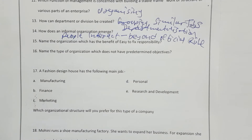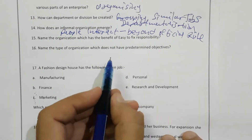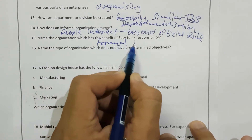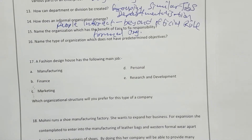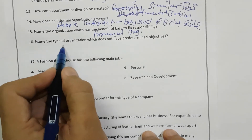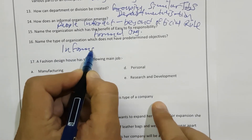Name the organization which has the benefit of easy fixed responsibility. Obviously it is formal organization, because responsibility is clearly fixed. Next, name the type of organization which does not have predetermined objectives. Obviously it is informal organization, as it has no predetermined objectives.